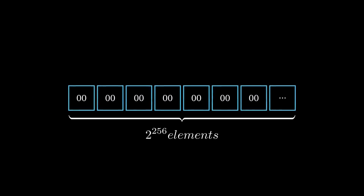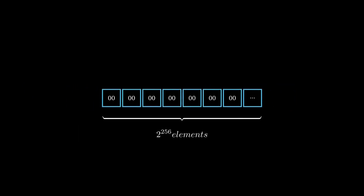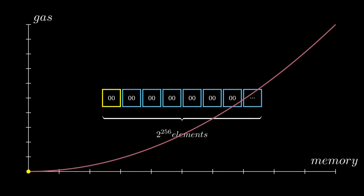In theory, this array has 2 to the 256 elements. However in practice, only a small amount of memory can be used, because the cost to allocate memory is quadratic. Basically, to use n slots of memory, or n bytes, the gas cost will be in the order of n squared. Since there's a gas limit for the blocks in the blockchain, this puts a limit on the number of memory slots that can be used.